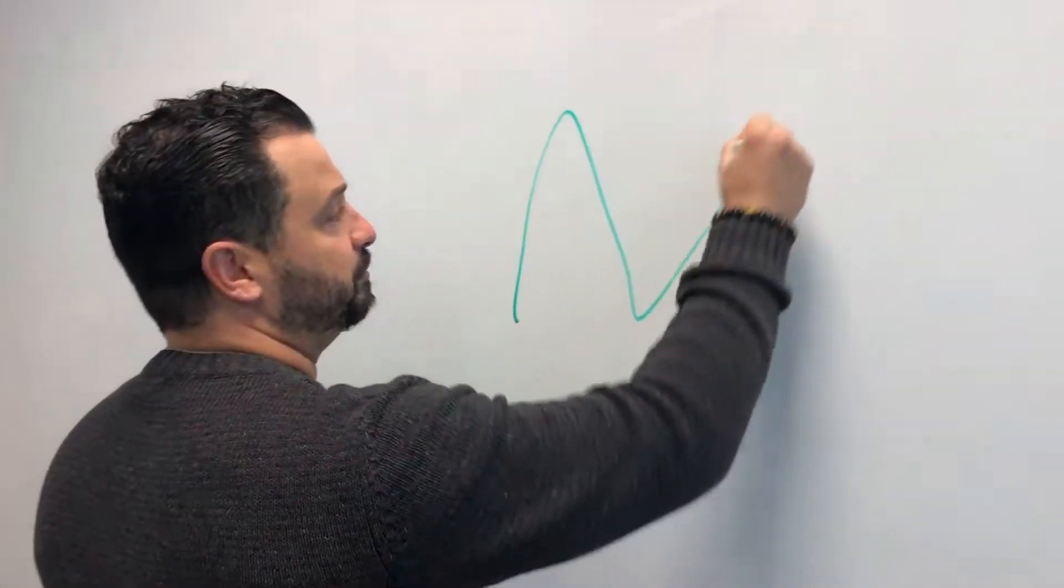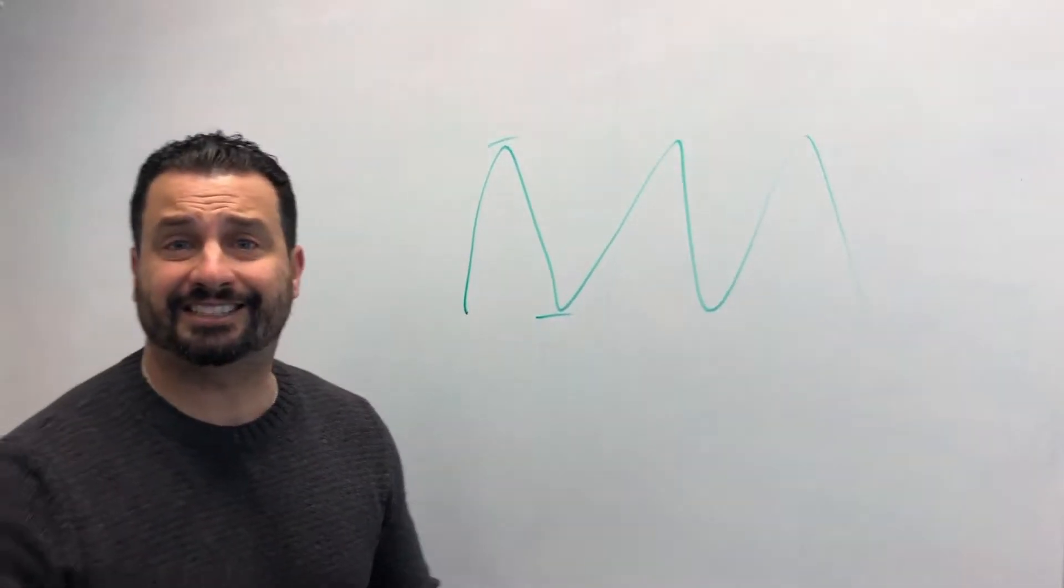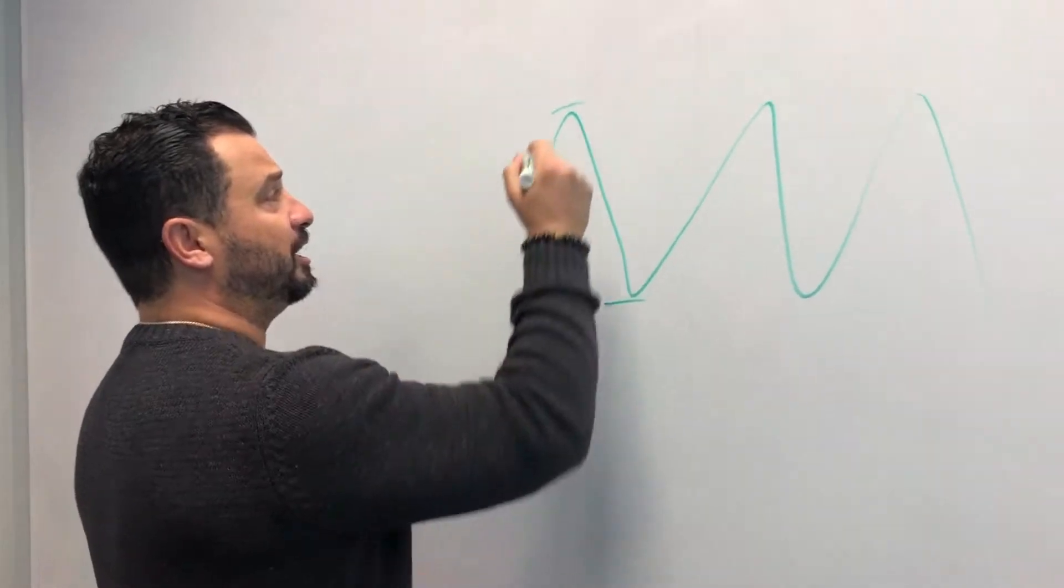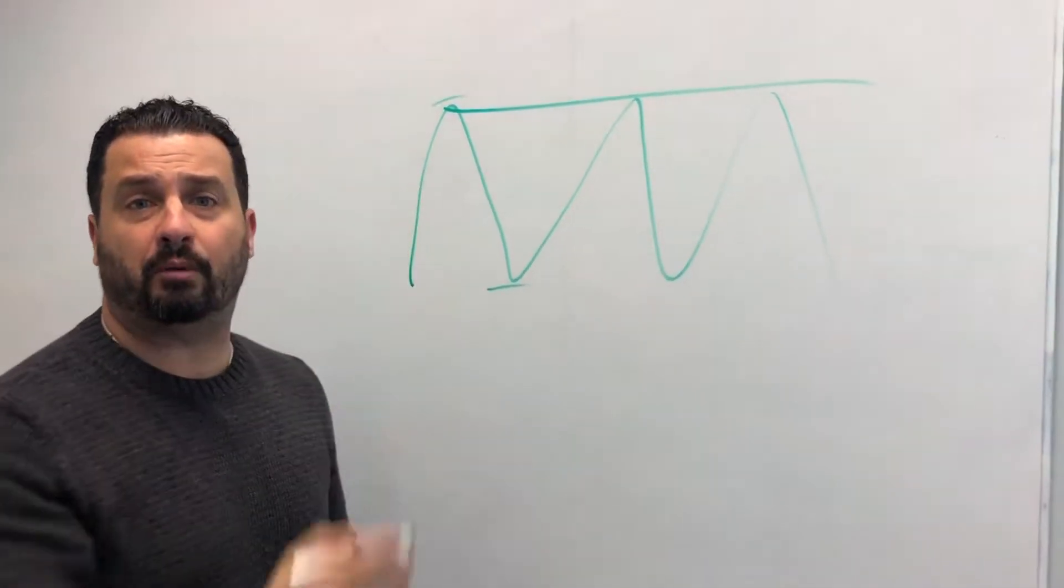Look, we know there's going to be what we call peaks and these valleys. It's going to happen. You can set out a plan, and it doesn't mean that you're going to get up here to this peak and you're going to stay all the way here. You're going to go through what we call peaks and valleys.